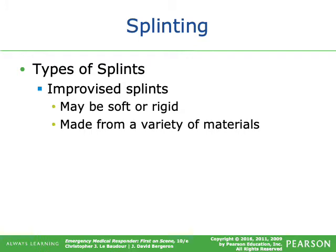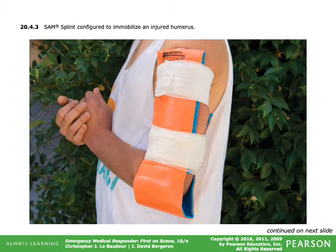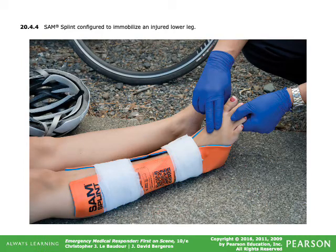The SAM splint is a flexible splint that can be molded to fit the arm — it's very versatile and can be used for forearm fractures, humerus fractures, and lower extremity injuries. When treating a patient with a broken femur following a motor vehicle crash, applying a traction splint may be ill-advised — it takes a long time and can delay transport. With high mechanism of injury, the priority is to get off scene as quickly as possible.